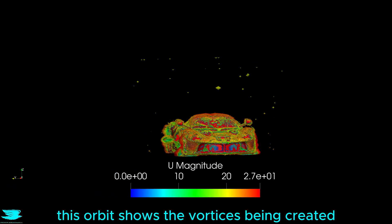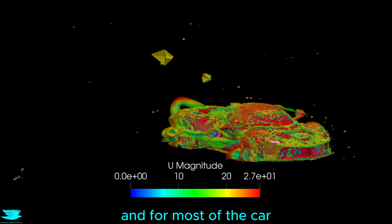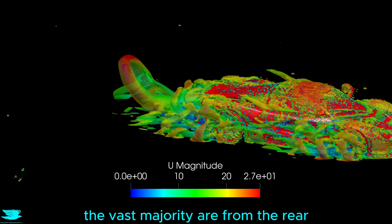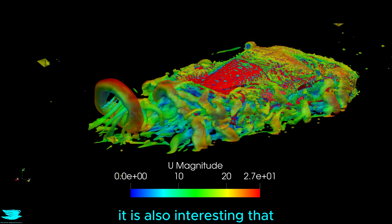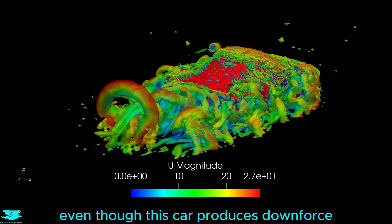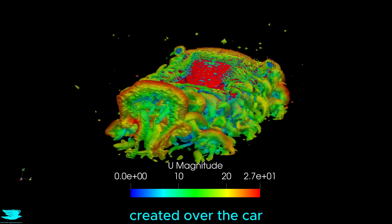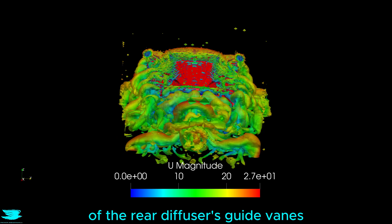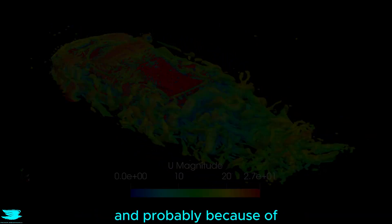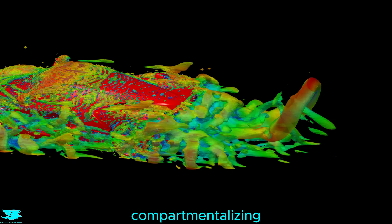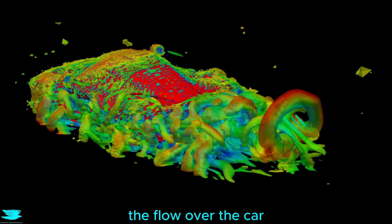This orbit shows the vortices being created, and for most of the car, none are created. The vast majority are from the rear, and the only other major contributors are from the wheels. It is also interesting that even though this car produces downforce, no large vortices are created over the car, which is partly because of the rear diffuser's guide vanes, which stop the flow from bowing out, and partly because of how well the underbody is compartmentalising the flow from the rest of the flow over the car.